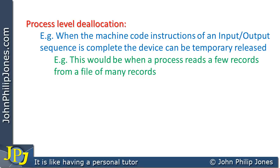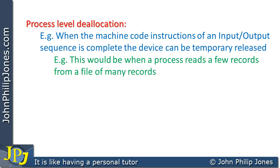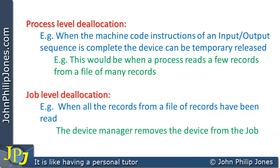At the process level, we haven't yet released the process control block. At the job level deallocation, when all the records from a file have been read, we can remove the Device Manager from the job — so the process control block is, in this case, released entirely.